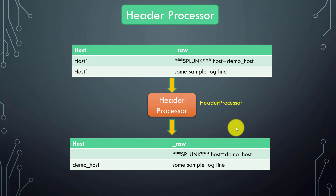In the previous video we talked about the header processor. Now let us stop there and discuss a new log called matrix.log, which is also related to the SplunkD.log. The source type for matrix.log in the internal index is SplunkD only, because matrix.log also holds a lot of useful information. So we will cover SplunkD.log and matrix.log together.